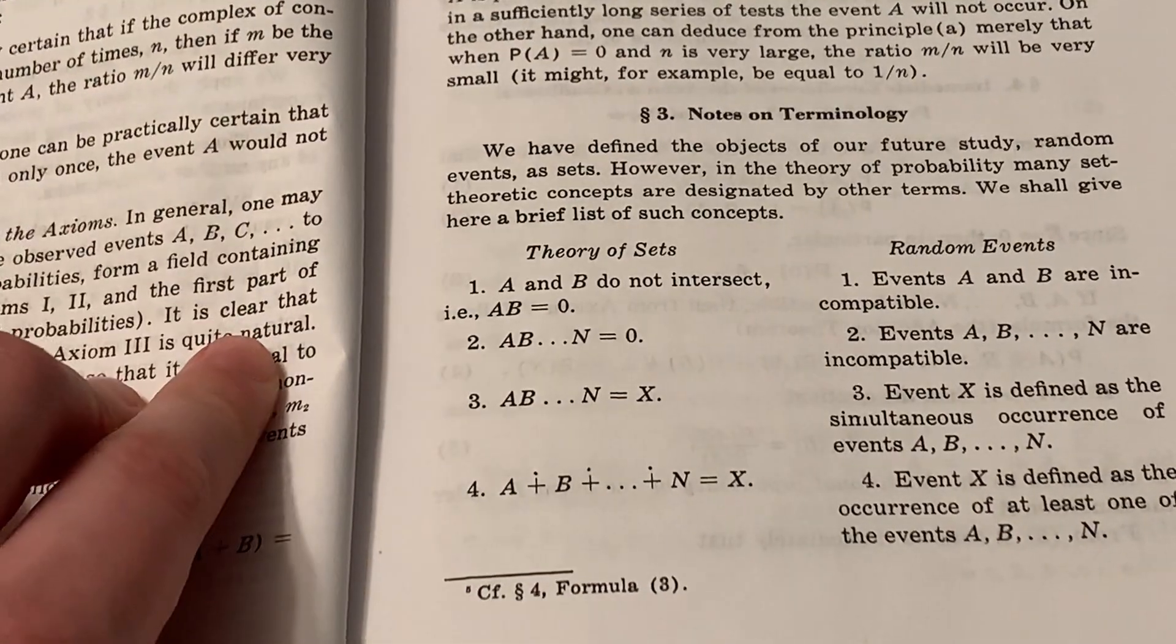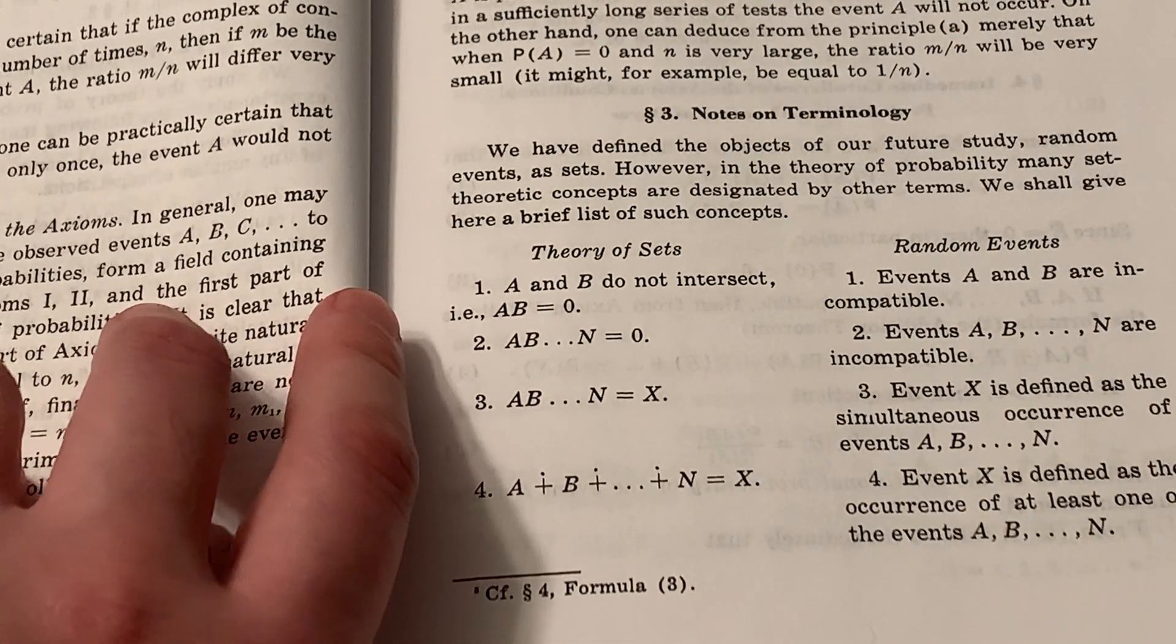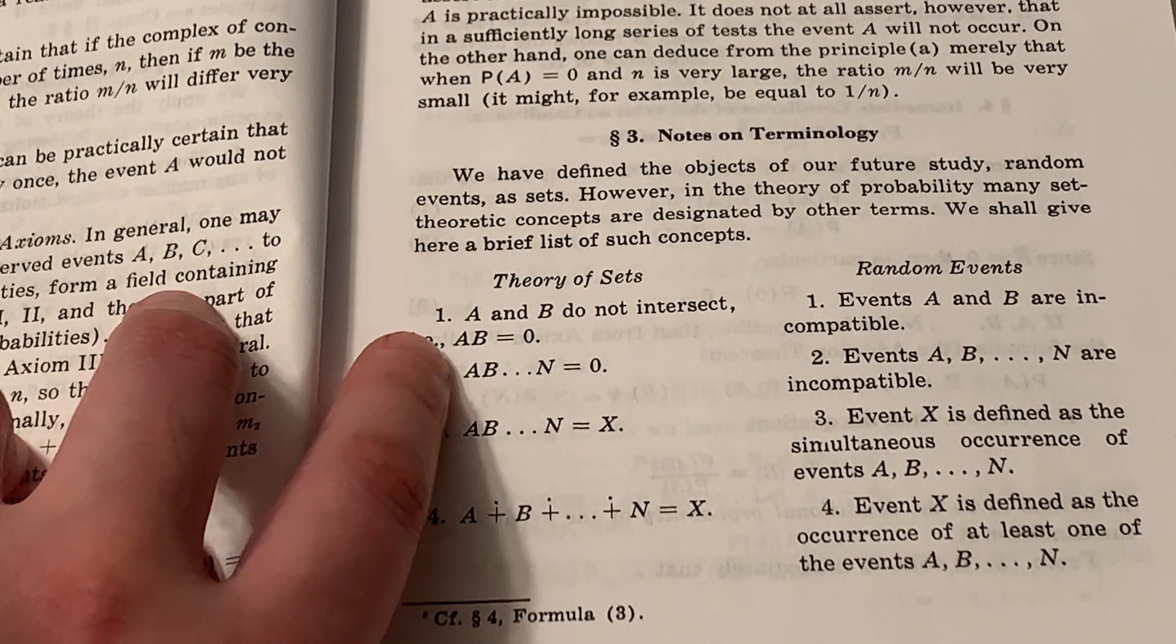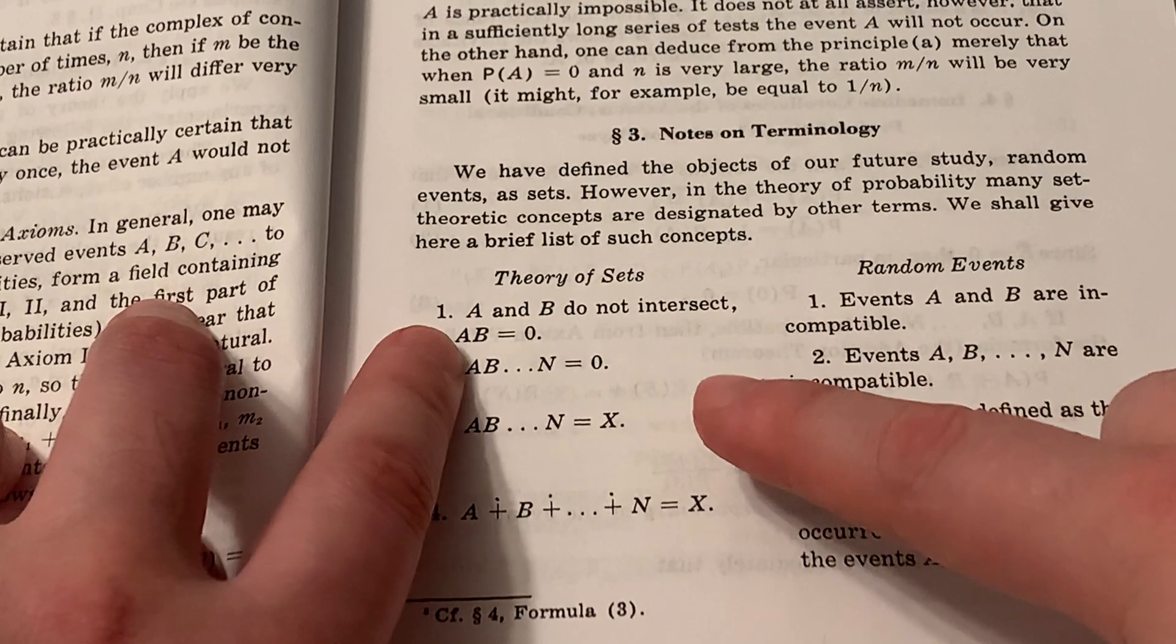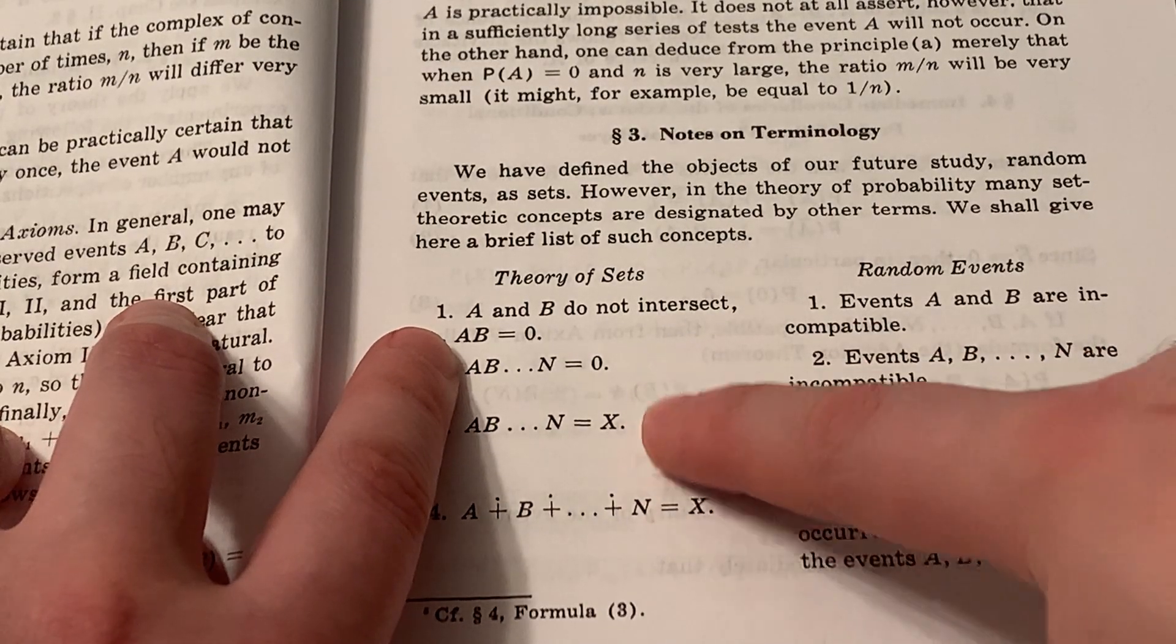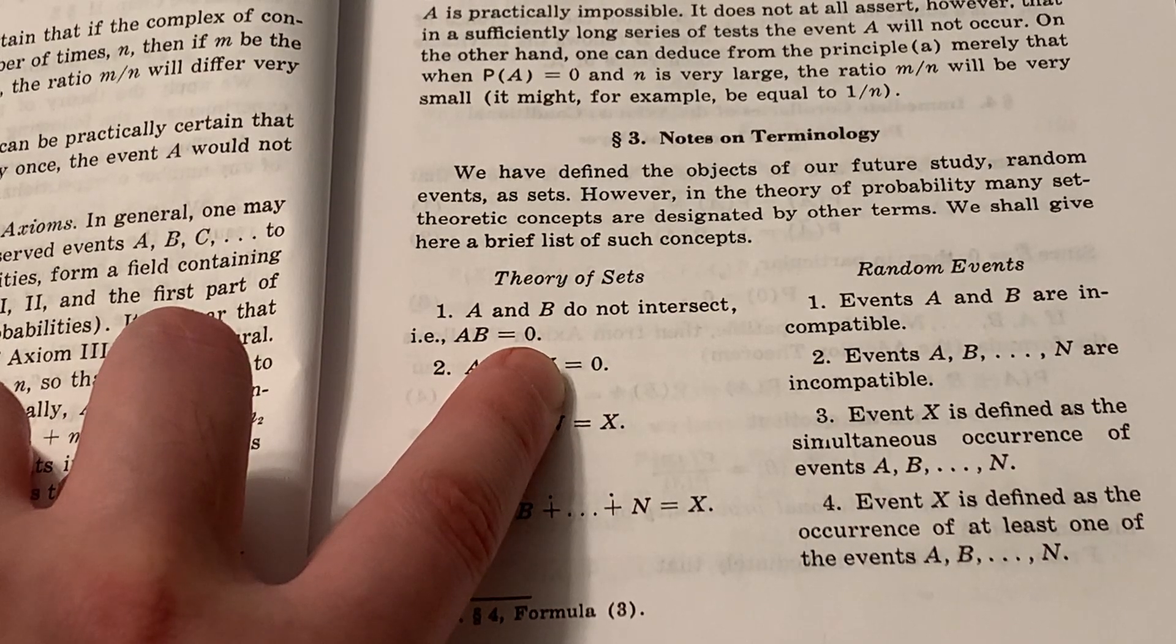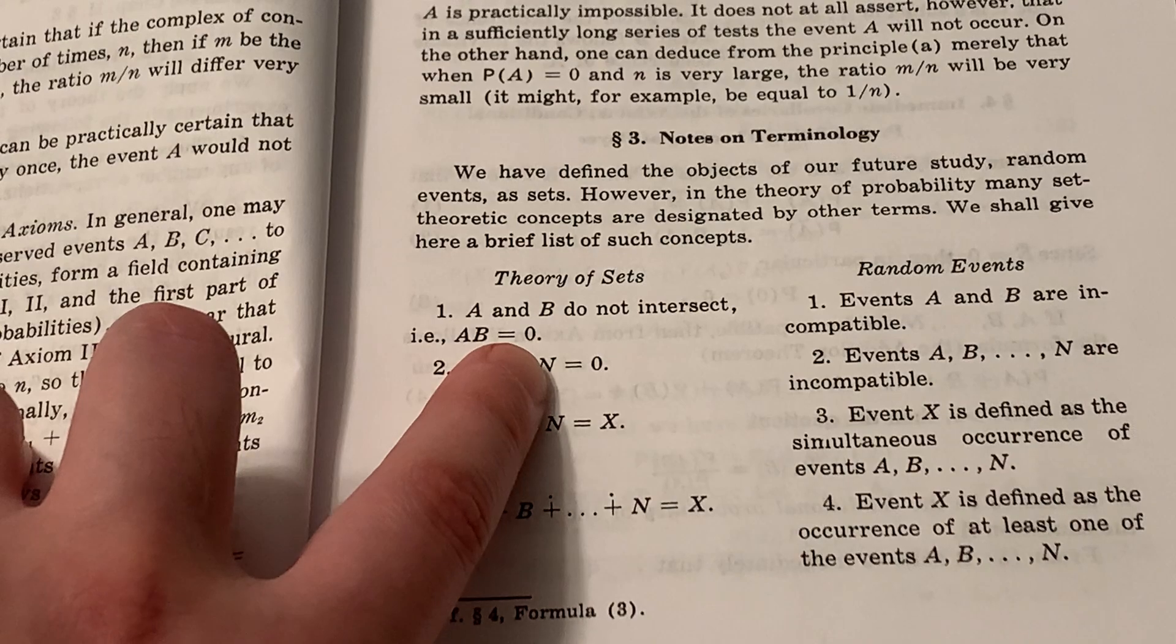I would like to remark that because this work was published in the 1930s, the notations in set theory are not yet standardized. For example, the intersection of two sets, A and B, is simply written as AB. There's no modern symbol of intersection, you know, the upside down big U. And also, at the time, there was no special symbol for the empty set yet. So the empty set is just denoted as zero.